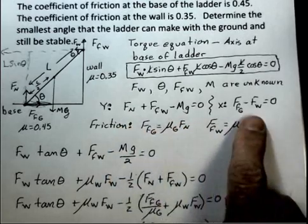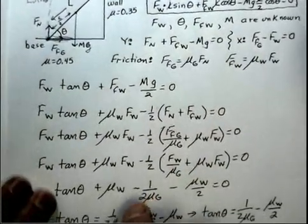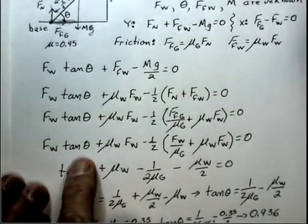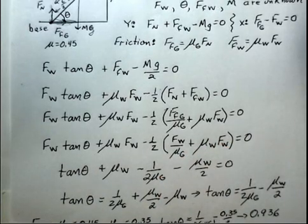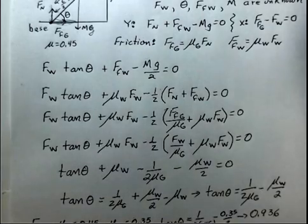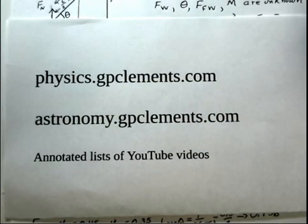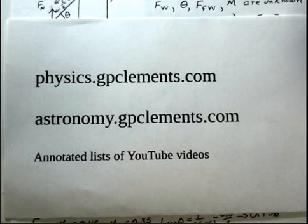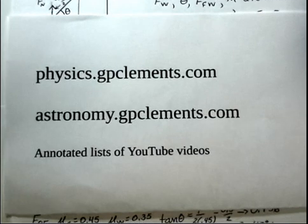We started with four unknowns in one equation, but the extra conditions for static equilibrium — forces summing to zero in both x and y directions, plus the two friction relations — allowed us to eliminate variables and solve for theta. I hope that was instructive. If you'd like to see other tutorials, visit physics.gpclements.com and astronomy.gpclements.com. The site is free with no registration. If you like the videos, please subscribe to my YouTube channel, and ask your instructor if you have questions.